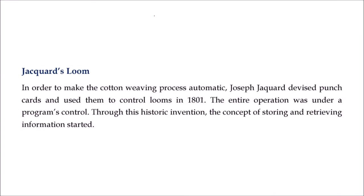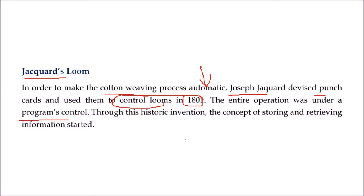Jacquard's Loom was a paradigm shift. Joseph Jacquard, in order to make his cotton weaving process automatic, devised punched cards and tried to control these looms in 1801. Everything was program-controlled. This was a historic invention, and it had the concept of storing and also retrieving information.